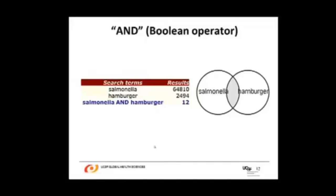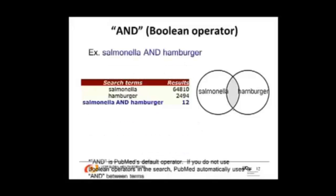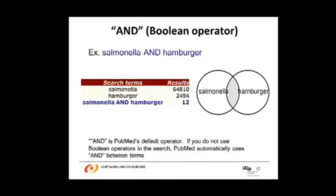Finally, the AND operator. This only looks at the intersection or commonality of articles — for example, articles with the word SALMONELLA and articles with the word HAMBURGER. It will not include all SALMONELLA articles, and it will not include all HAMBURGER articles. It will only include articles that have them together. AND is PubMed's default operator — if you do not use Boolean operators in your search, PubMed automatically uses AND between terms, as we saw in the phototherapy and diabetes example.